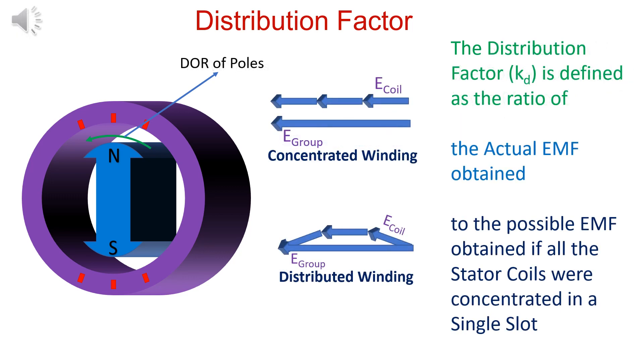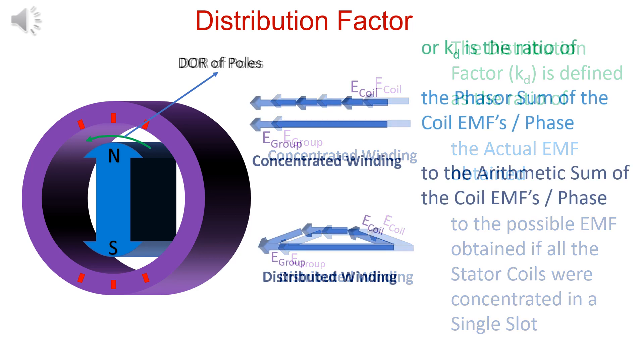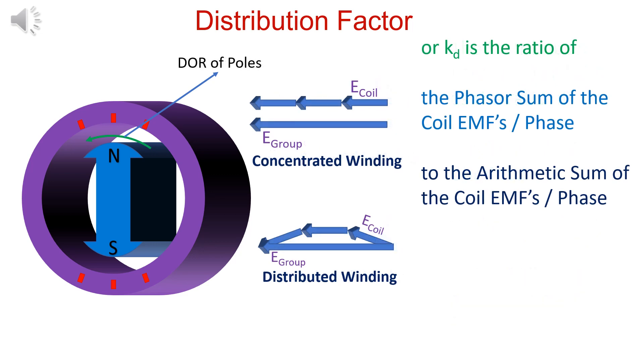The distribution factor is defined as actual EMF divided by the possible EMF if all the coils are concentrated. The distribution factor KD is the ratio of phasor sum and arithmetic sum of EMF induced in a coil.